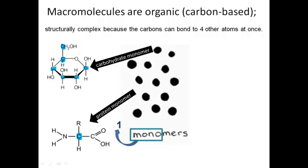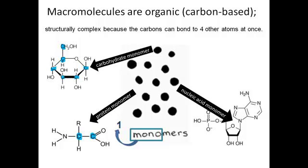Same with this protein monomer. Two carbons centrally located, allowing the rest of the molecule to be more complex. Same too with this nucleic acid monomer.